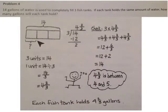Here's our tape diagram. The whole is fourteen divided into three equal parts. Three units equals fourteen. One unit then would equal fourteen divided by three. Fourteen-thirds.